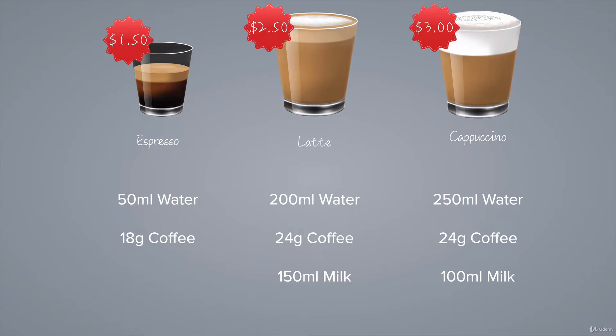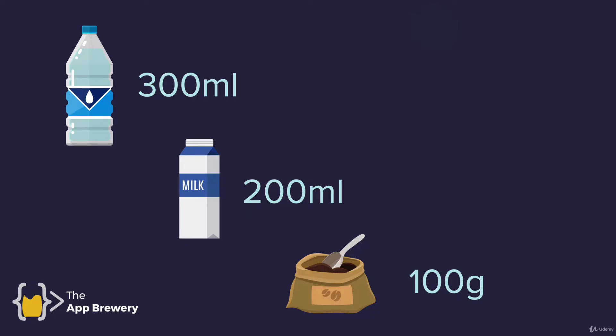We're going to be modeling all this data in our coffee machine program. Luckily, in the starting code I've already included all of this data inside a dictionary, so you don't have to remember it. The coffee machine also has resources it needs to manage: it starts out with 300 mils of water, 200 mils of milk, and 100 grams of coffee.